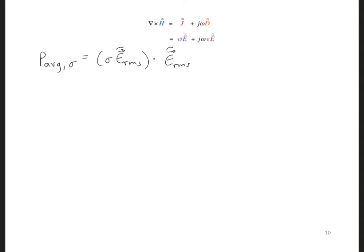And indeed, when we evaluate the dot product, we see that the j and the e are completely in phase because j is equal to sigma e, and j rms dotted with e rms is sigma e rms dotted with e rms, which is equal to sigma e rms squared in watts per meter cubed.